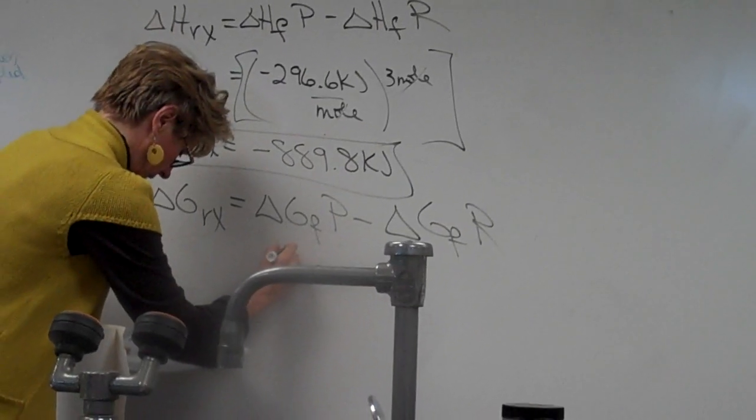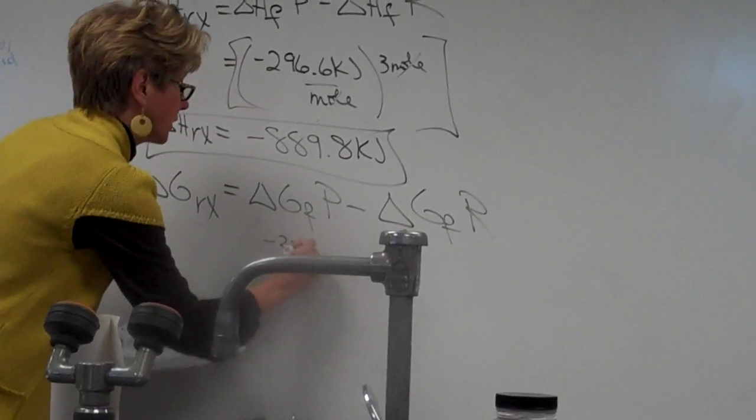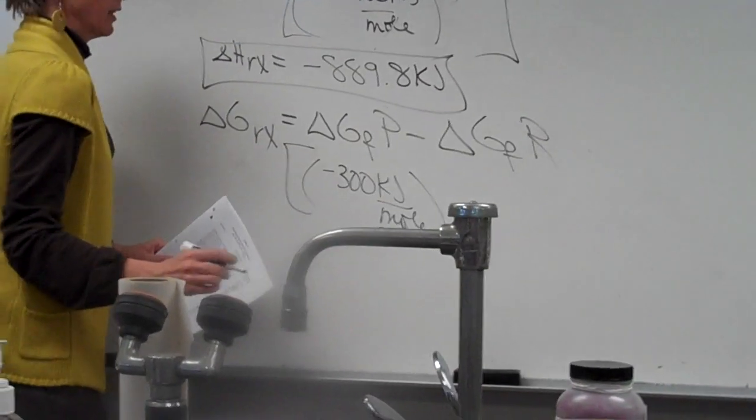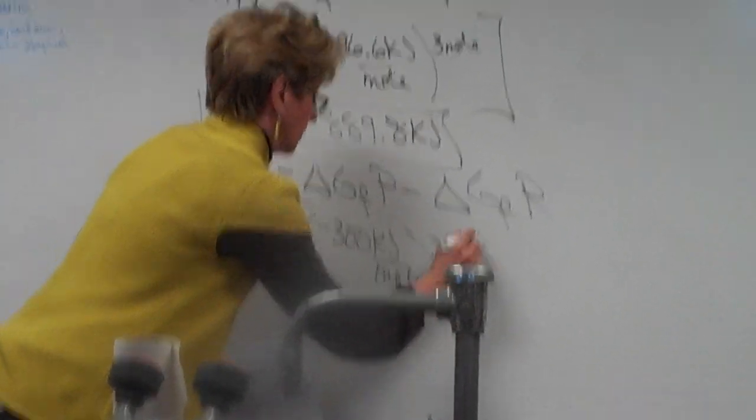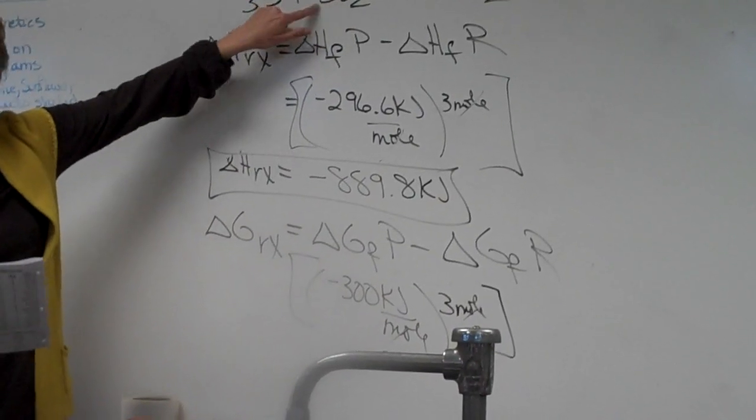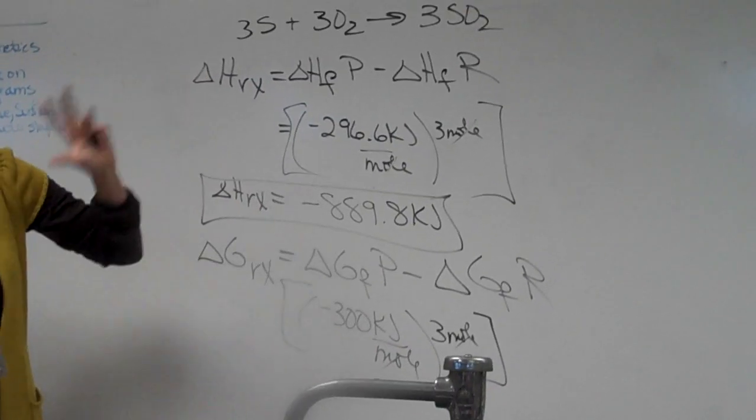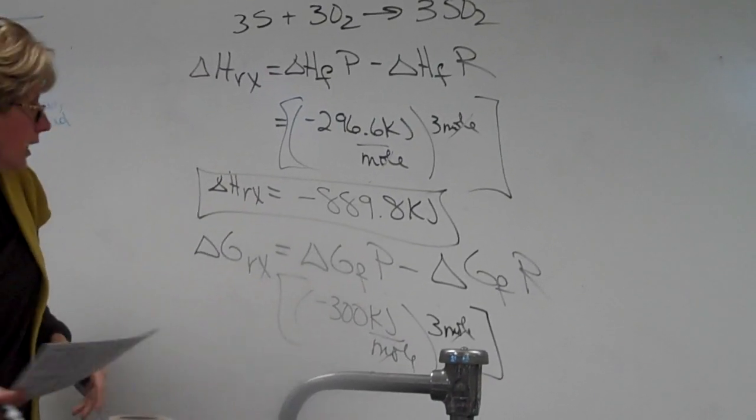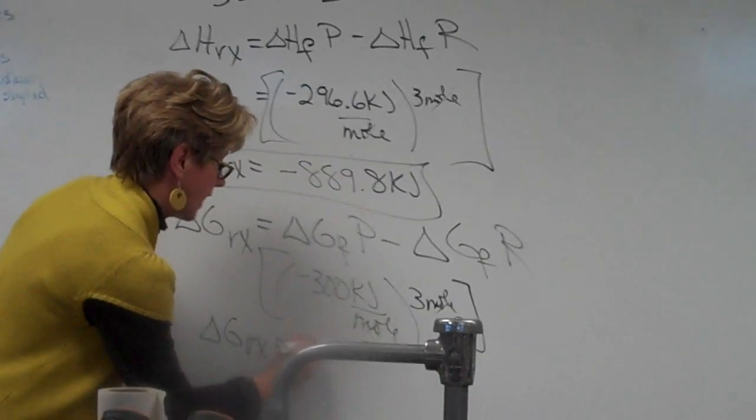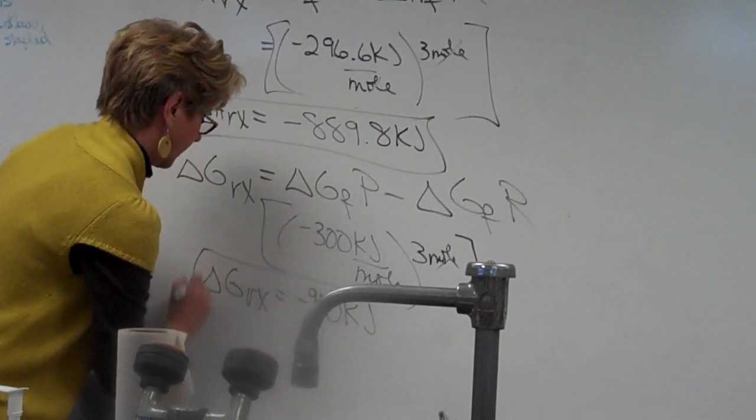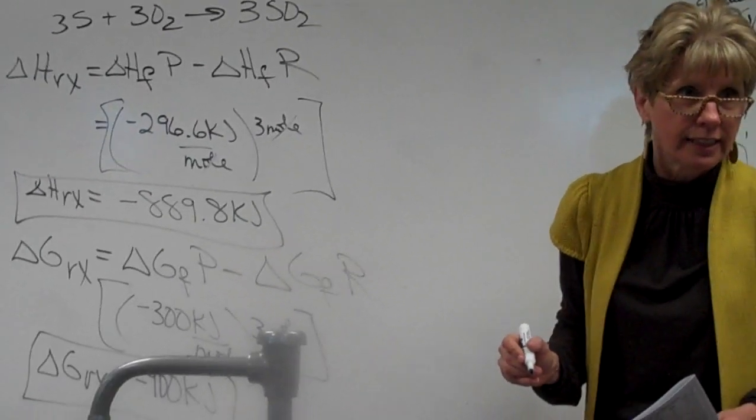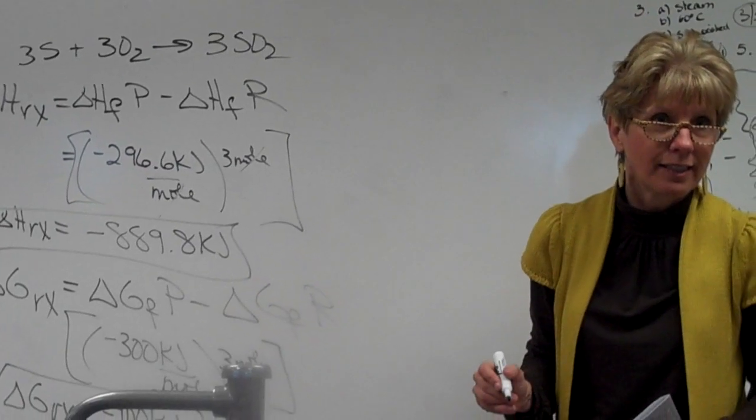What's the Gibbs free energy of SO2? Negative 300. Negative, I'm sorry, negative 300 kilojoules per mole, right? How many moles do I have? I have three moles. Moles are going to cancel out. And then again, there's no Gibbs free energy of formation of elements. It's zero. Everyone good? So here we get delta G of reaction is equal to negative 900 kilojoules. Is that good? How's everyone feeling?